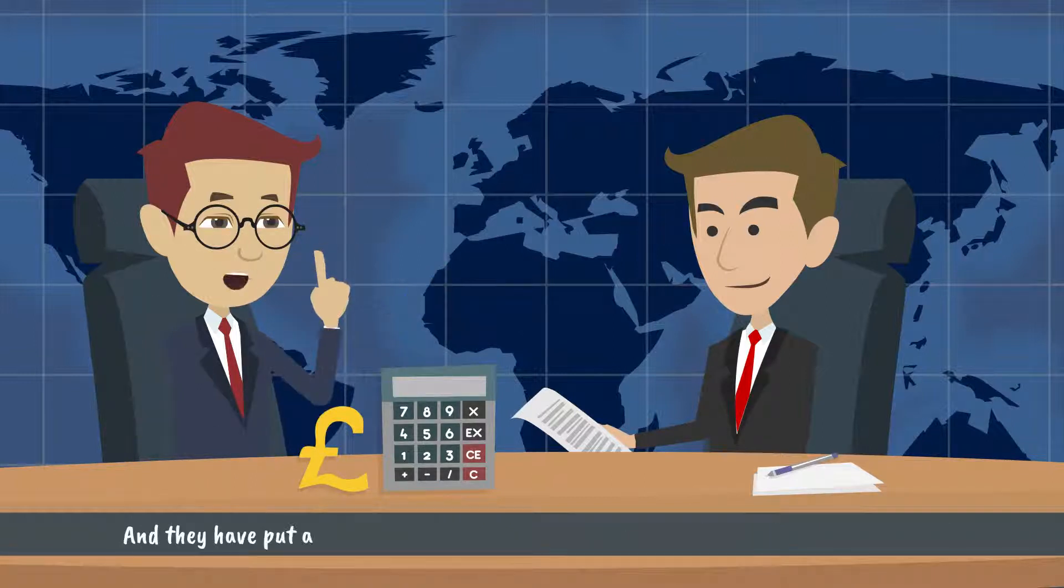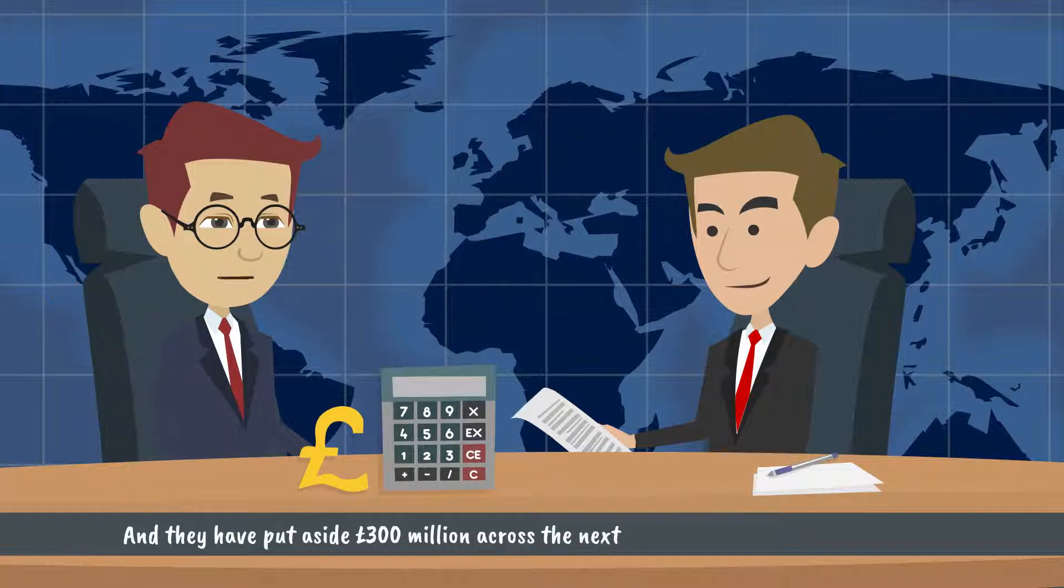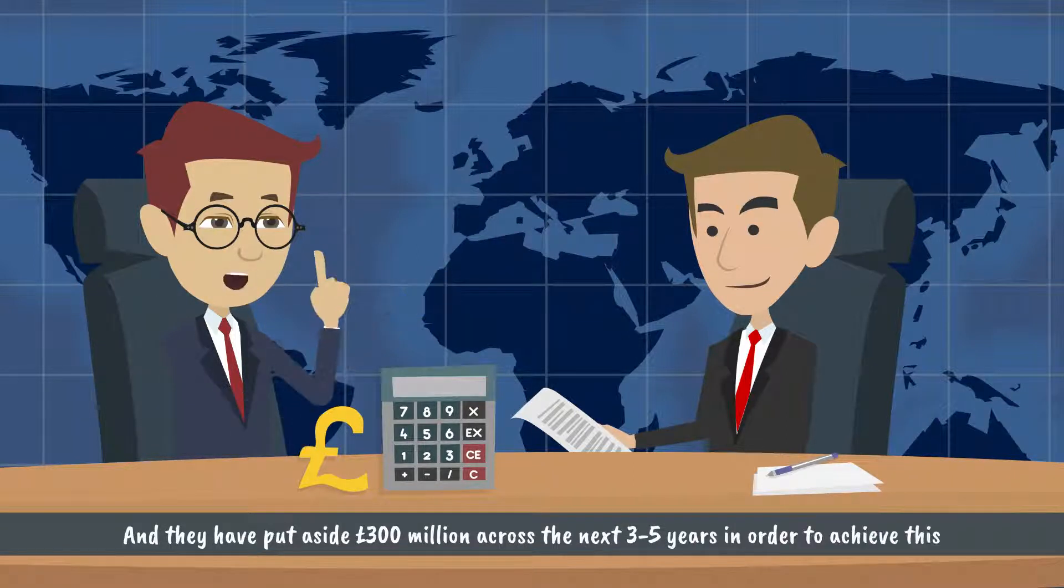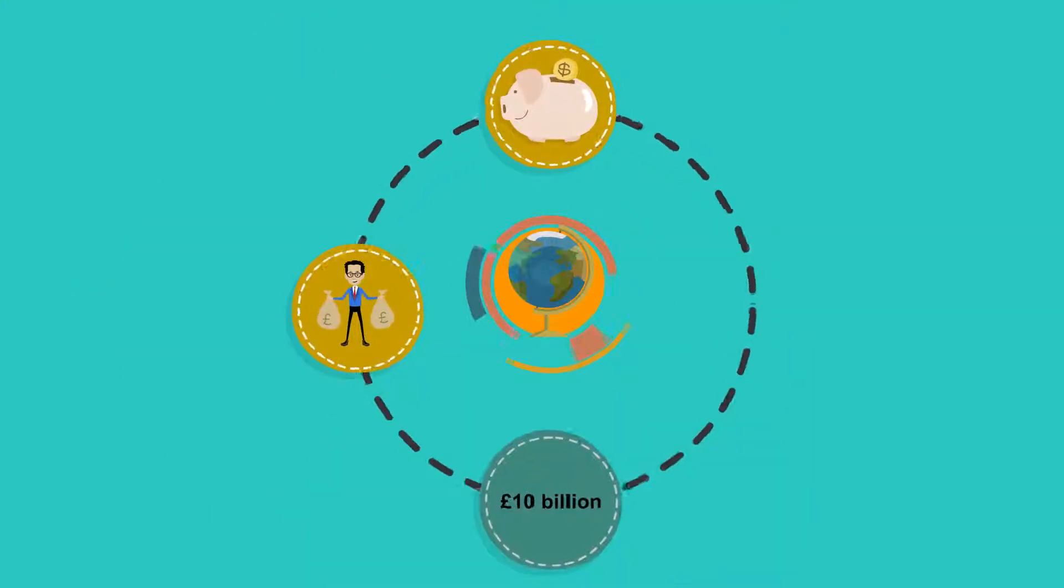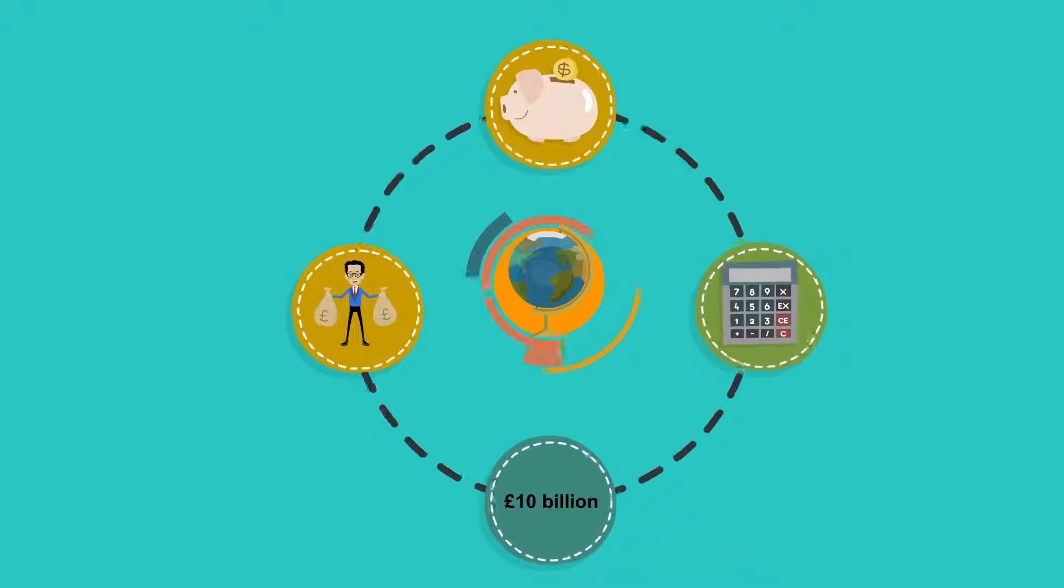They have put aside £300 million across the next three to five years in order to achieve this. However, experts predict that all in all our very own banks and lenders could owe the UK public a staggering £10 billion in miscalculated mortgage payments.